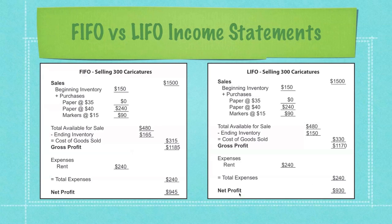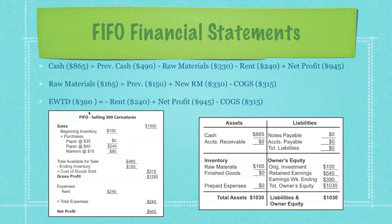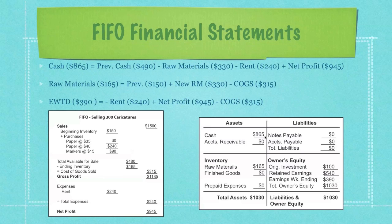What we're doing with last in first out is making our net profit or earnings look smaller. But as I mentioned in a previous tutorial, eventually that catches up to the company. Now I'm going to go very specifically through a first in first out financial statement. Over here we have our income statement, and over here we have our balance sheet. How did we calculate cash in this situation? We took our previous cash amount of $490, took out our raw materials of $330 that we purchased, took out our rent, and then added back in our net profit, which comes from the income statement.